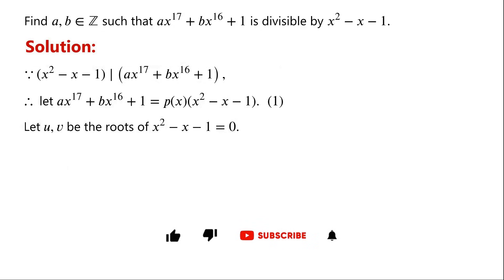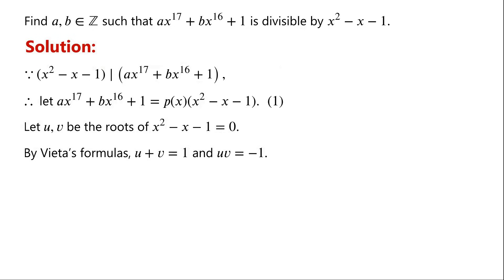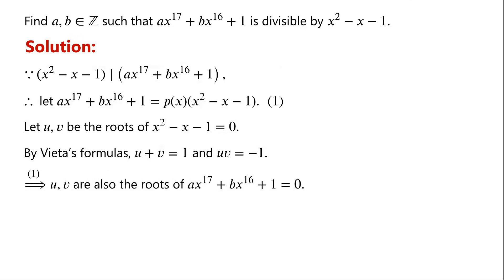Let u and v be the roots of the quadratic equation x squared minus x minus 1 equals 0. By Vieta's formulas, we know that u plus v equals 1 and u times v equals negative 1. Then from the polynomial factorization identity, we know that u and v are also the roots of the equation ax to the power of 17 plus bx to the power of 16 plus 1 equals 0. Substituting u and v into the equation, we have a system of equations.